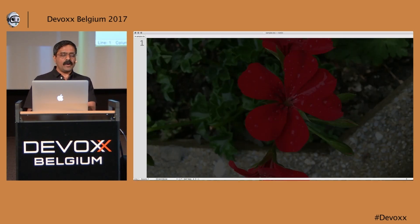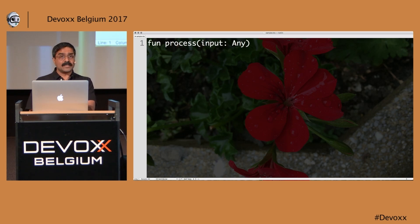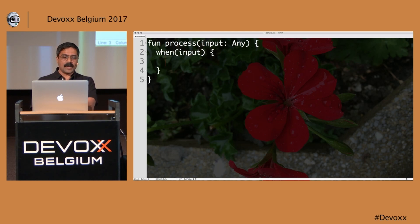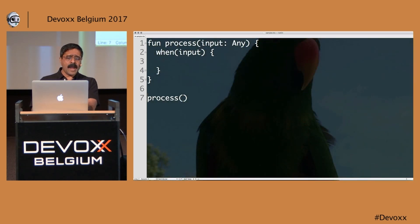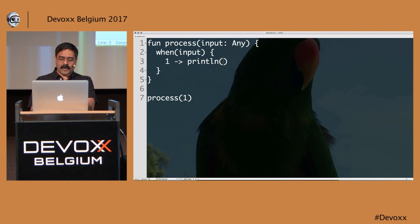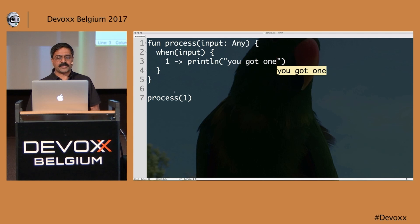When is a very beautiful pattern matching syntax that can remove a lot of ceremony from your code. Let me create a function called process that takes an input of type Any, and I'll use a when block on the input. I'll call process(1), and in the when block say '1 -> println("you got one")'. When I call process, it says 'you got one'.